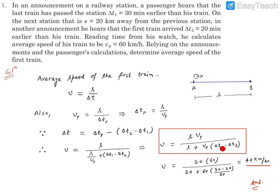This is an expression that contains all the known quantities, and we can find this unknown quantity V average. Now putting the value: S is 20, Vp is 60, and then again S is 20, Vp is 60, and Delta T1 is 30, Delta T2 is 20, divided by 60 because these are in minutes. We can convert into an hour. This 60 gets canceled out.